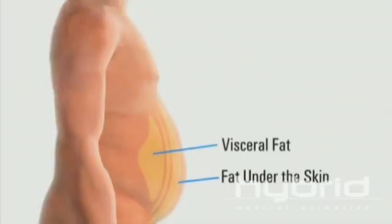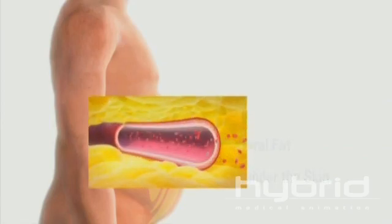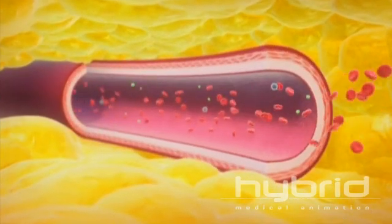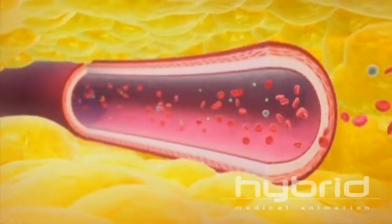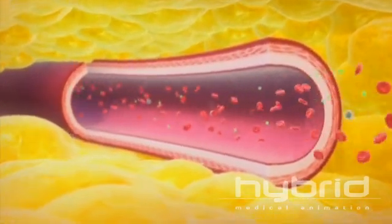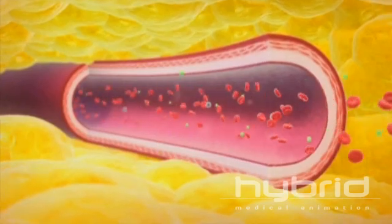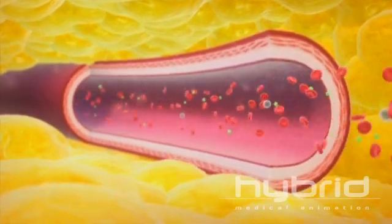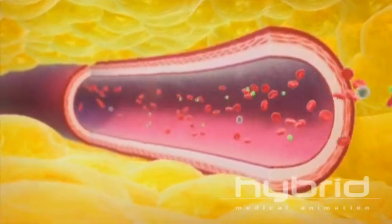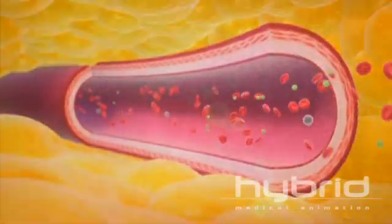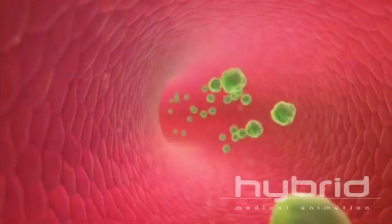The bad fat in your body is the abdominal fat, which we call visceral fat, because the cells in this fat produce hormones and chemical substances that get into the bloodstream and cause damage to the blood vessel wall. These are shown as the green spheres here.